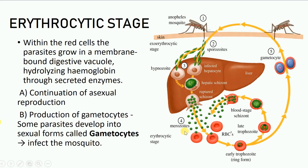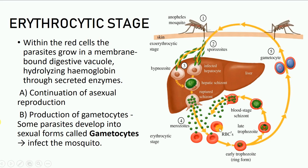The merozoites will now infect the red blood cells. Once inside the red blood cells, the parasite grows in a membrane-bound digestive vacuole and hydrolyzes the hemoglobin of the host RBC with the help of secreted enzymes. This results in the formation of a ring-like structure called an early trophozoite, which can mature into a late trophozoite. The late trophozoite carries out asexual reproduction, resulting in a blood-stage schizont containing thousands of merozoites. Upon rupture, these merozoites are released to infect other RBCs, continuing the cycle.